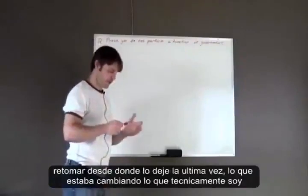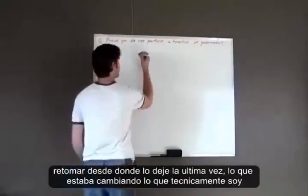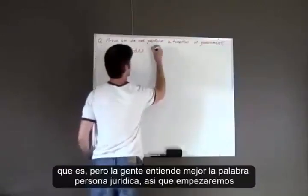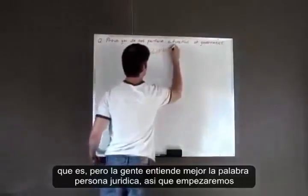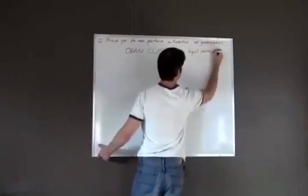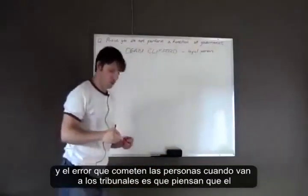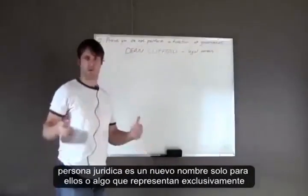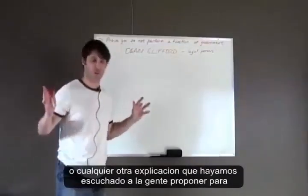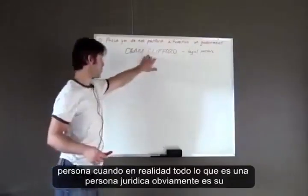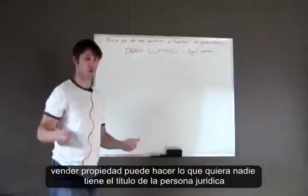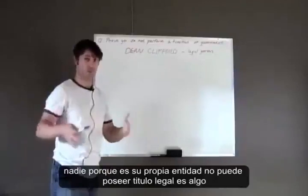We'll pick up from where I left off last time, which was changing what I'm technically calling the legal person. I referred to it last time as a presumption of law, which it is, but people understand the word 'legal person' better. The mistake people are making when they go to court is they think the legal person is a new name just for them, or something they represent exclusively, or something that binds statutes to them. But what a legal person actually is — it's its own identity, its own legal person. It has rights. It can own property, sell property, do anything it wants. No one owns title to the legal person, because it is its own entity.